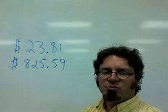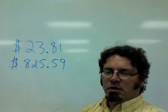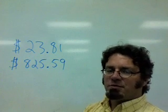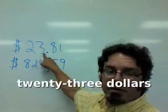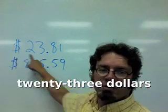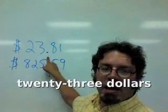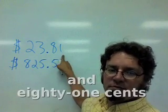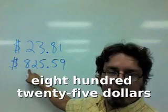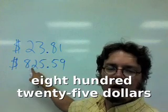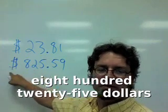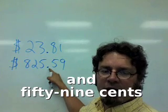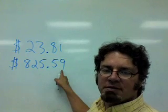When a decimal point is used in money, you read it after the dollars. Twenty-three dollars. Twenty-three dollars and eighty-one cents. Eight hundred twenty-five dollars and fifty-nine cents.